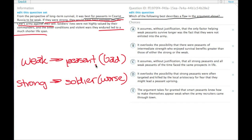Choice A: It assumes without justification that the only factor helping weak peasants survive longer was that they were not enlisted into the army. Well, it does assume that, but it sounds like there actually is justification. If there were bitter conditions and violent wars and getting shot at potentially, that would make being a peasant more likely to make you live longer. So that's not tempting for the right answer. It's actually a good part of the argument.